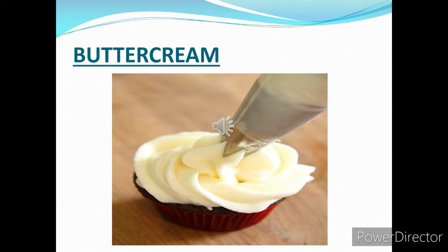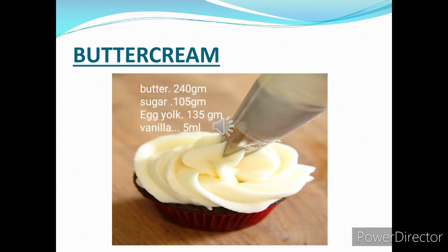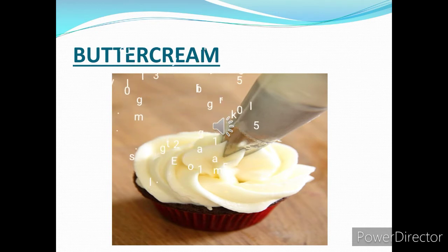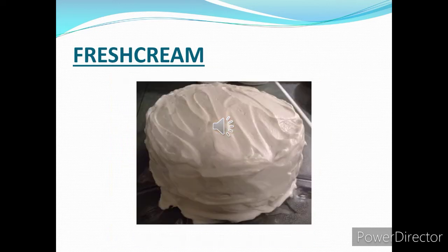Today we are going to discuss some of the common icings used in bakery. Buttercream icing is made by blending sugar and egg yolk together till they become light and fluffy, then unsalted cream butter is mixed into the egg yolk mixture. Buttercream can be blended with a number of flavors like fruits, chocolates, praline, etc. Buttercream icing is always stored in the refrigerator.